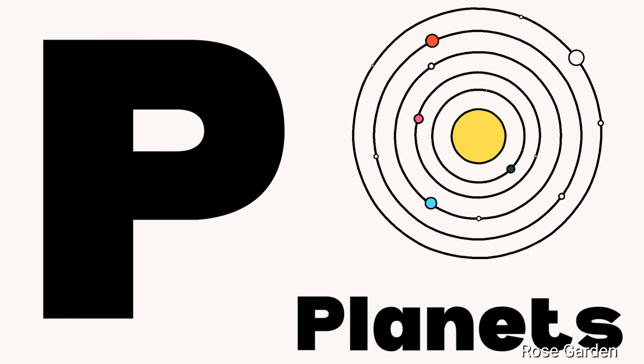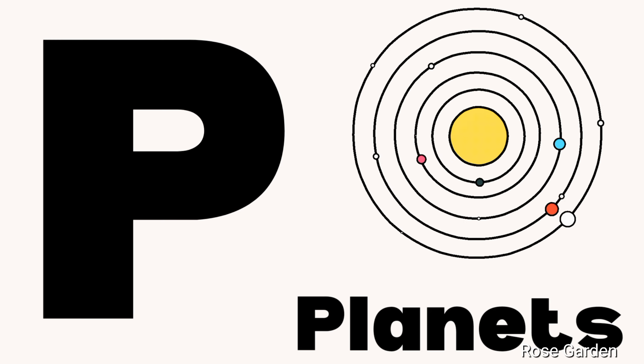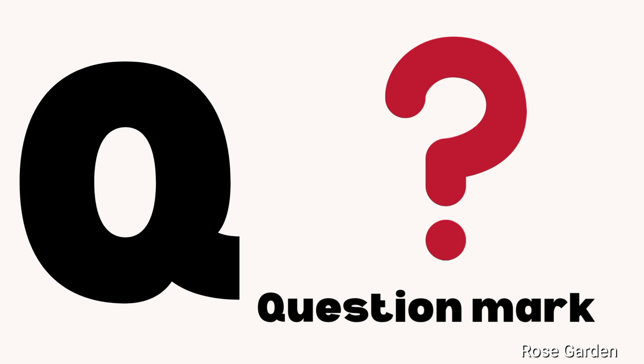P is for planets. P, p, planets. Q is for question mark. Q, q, question mark.